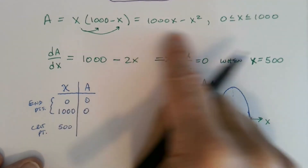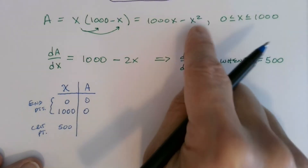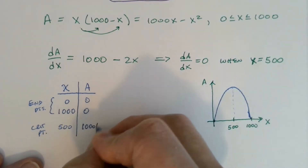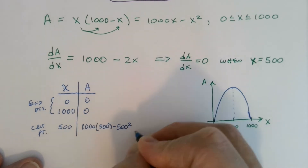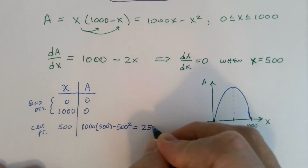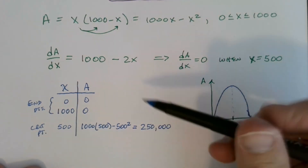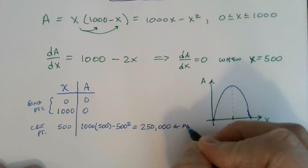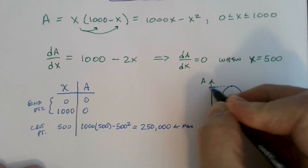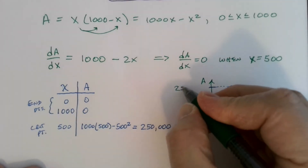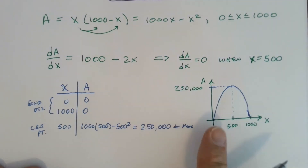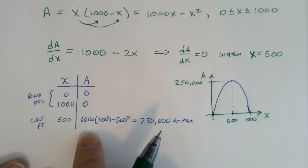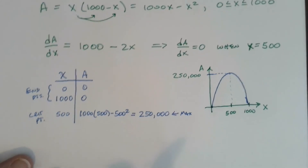Plugging in x = 0 and x = 1,000 both give area = 0. Plugging in x = 500: A(500) = 1,000(500) − 500² = 500,000 − 250,000 = 250,000 square feet. We're guaranteed a max and min on this closed interval, so this is the maximum. The minimum area is zero. The y-coordinate of the vertex is 250,000, confirming our maximum.